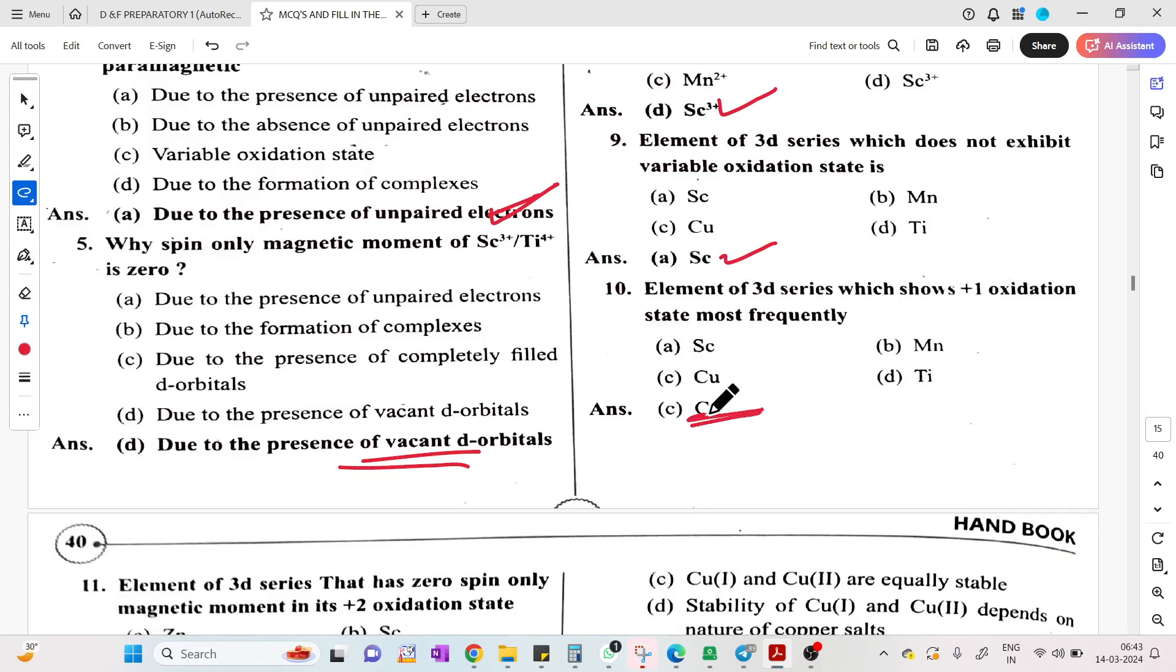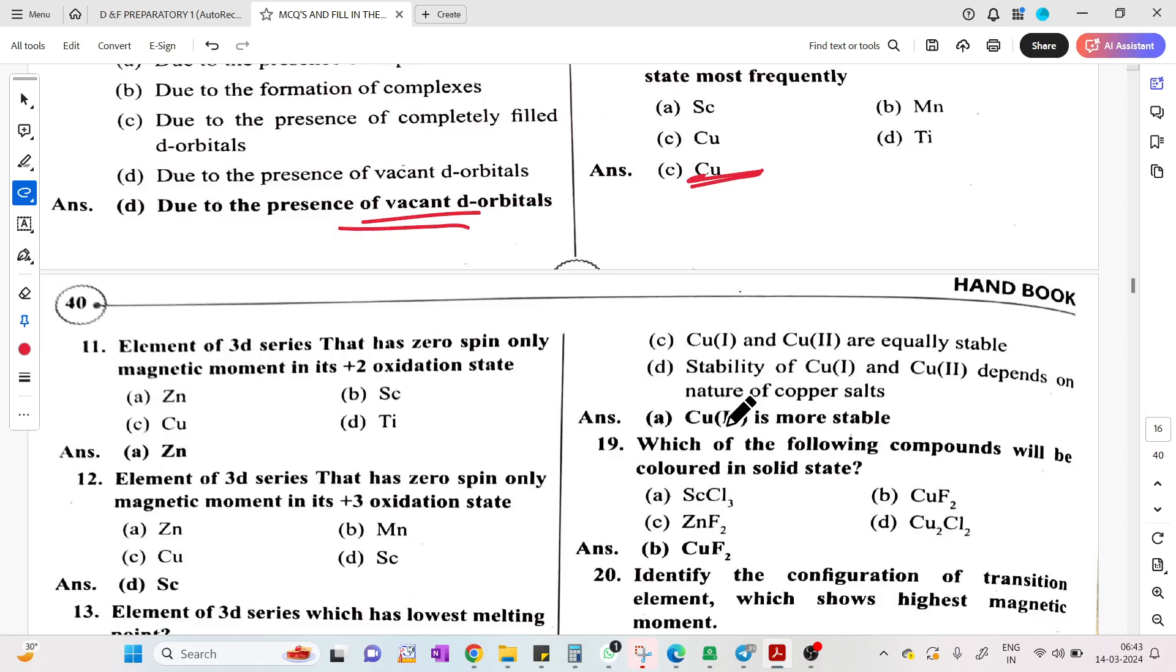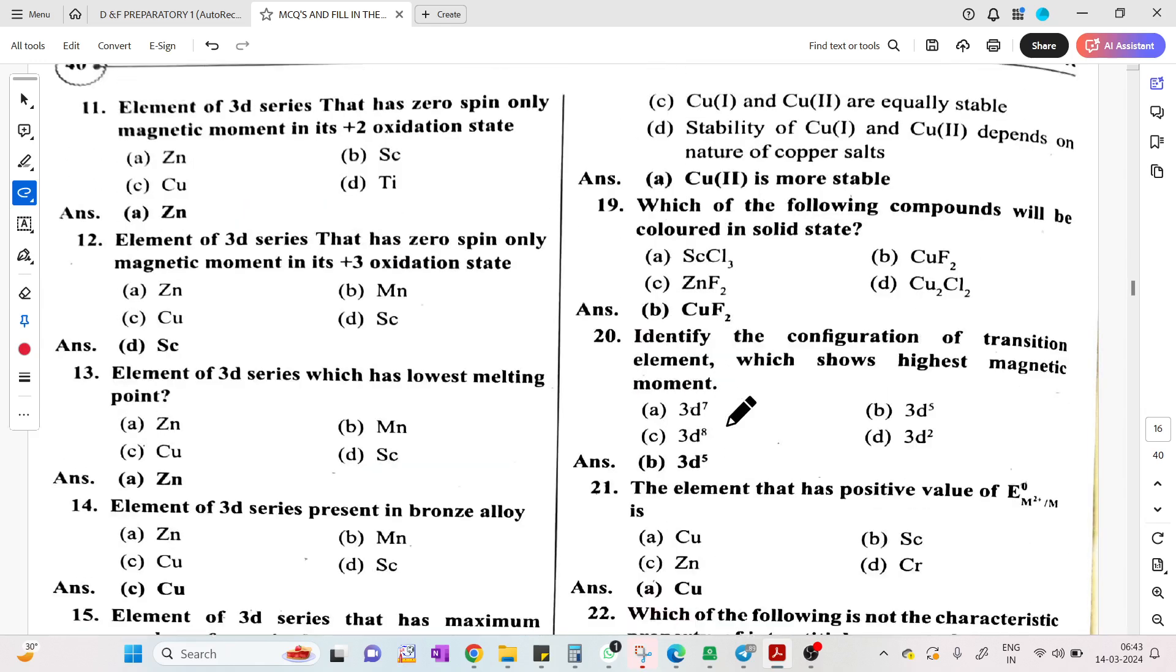Spin only magnetic moment of Zn2+ is repeated. The paramagnetic colored ion is Ti3+. Diamagnetic colorless is Sc3+. Elements of 3D series which does not exhibit variable oxidation state: Scandium. Elements showing plus 1 oxidation state: copper. Plus 1 oxidation state has unpaired electrons - copper 2+ becomes copper plus 1. Elements with zero spin only magnetic moment in plus 2: Zn2+ because N equals zero.